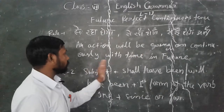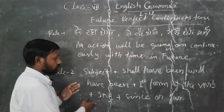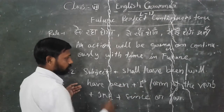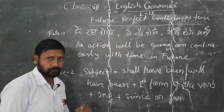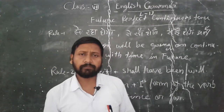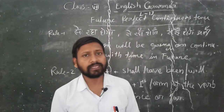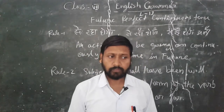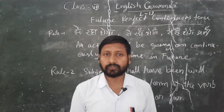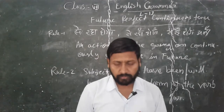And the second rule: Subject + shall have been / will have been + verb+ing + since/for. The use of since and for I have taught in video number 4, chapter number 4, so you can search that video and understand how to use since and for.